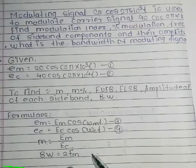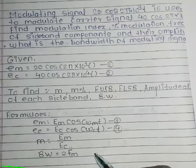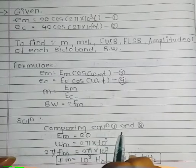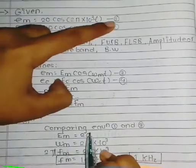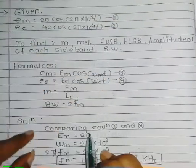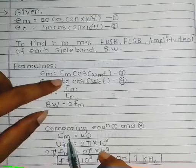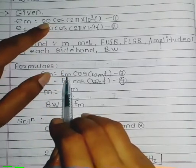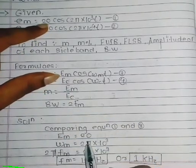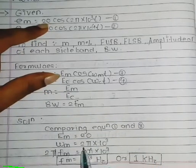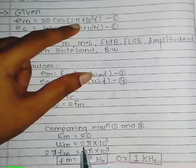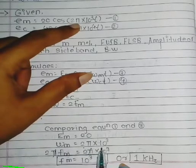Now we start the solution. Comparing equation 1 (modulating signal) with the standard form, equation 3, we identify Em = 20. We also identify ωm = 2π × 10³.